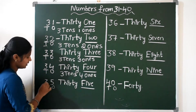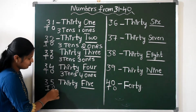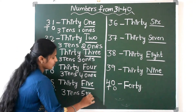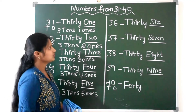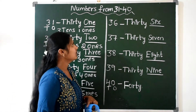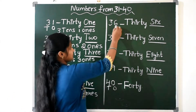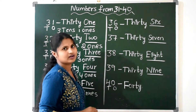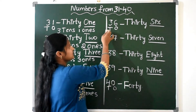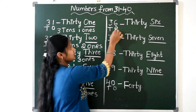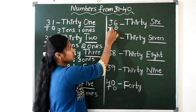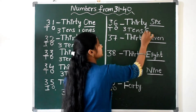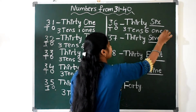Next, 35: 3 tens and 5 ones. Next, come to 36. What is the ones place? This is the ones place: 6. And the tens place is here: 3. So 6 is the ones place and 3 is the tens place. So 3 tens and 6 ones.